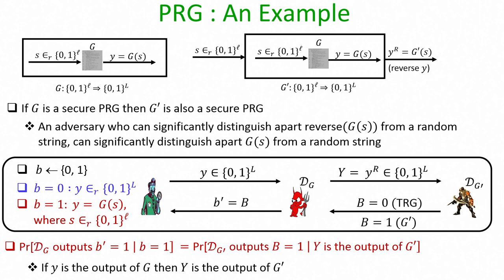To summarize this lecture: we have seen the primitive called pseudo random generator, a deterministic algorithm that expands its input to produce an output significantly larger than its input, indistinguishable from a truly random generator. We have seen various equivalent definitions of pseudo random generators and how to parallelly compose pseudo random generators a polynomial number of times to obtain a new secure pseudo random generator. I hope you enjoyed this lecture, thank you.